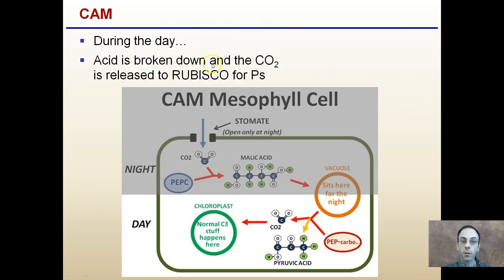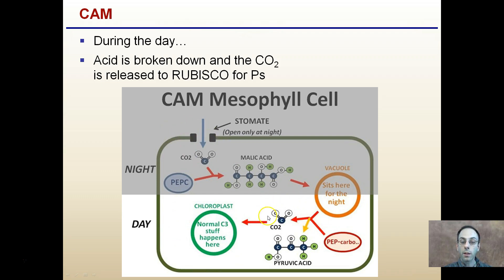In CAM plants during the day, the acid is broken down and the CO2 is released into rubisco for the photosynthetic process to occur. The stomata are closed, and this acid is fed into the light-dependent reaction while carbon dioxide is released. The normal C3 photosynthetic process then occurs with the stomata remaining closed, and that closed stomata during the day eliminates water loss from the plant.